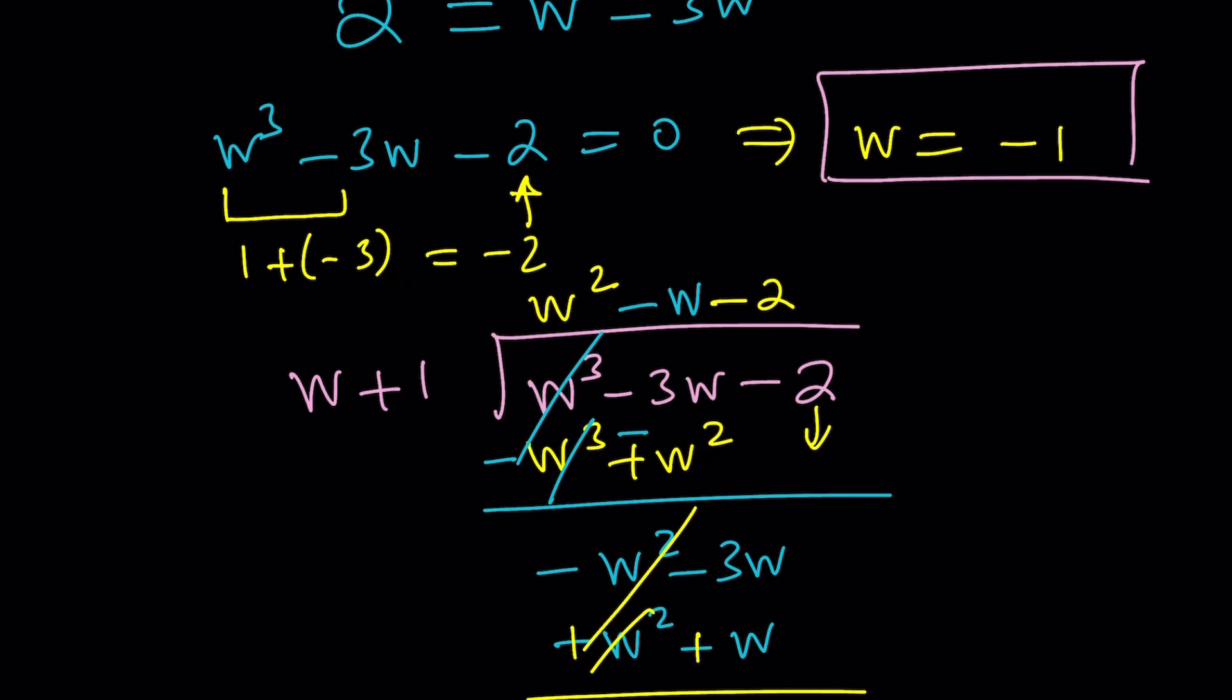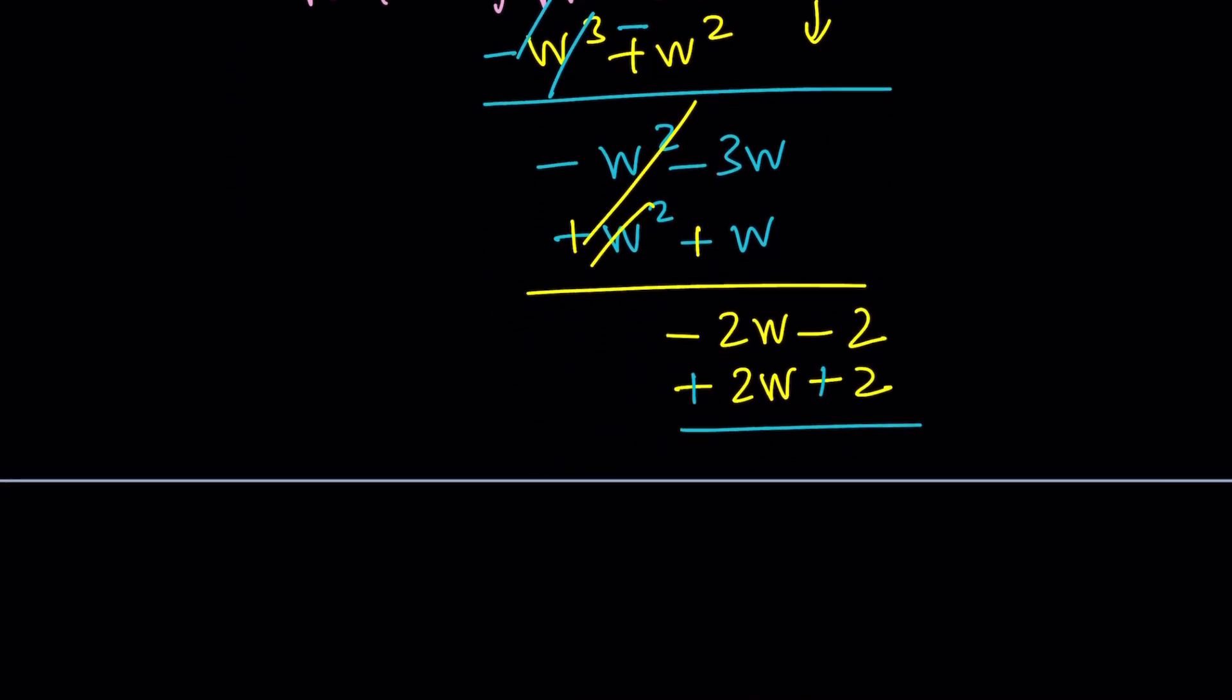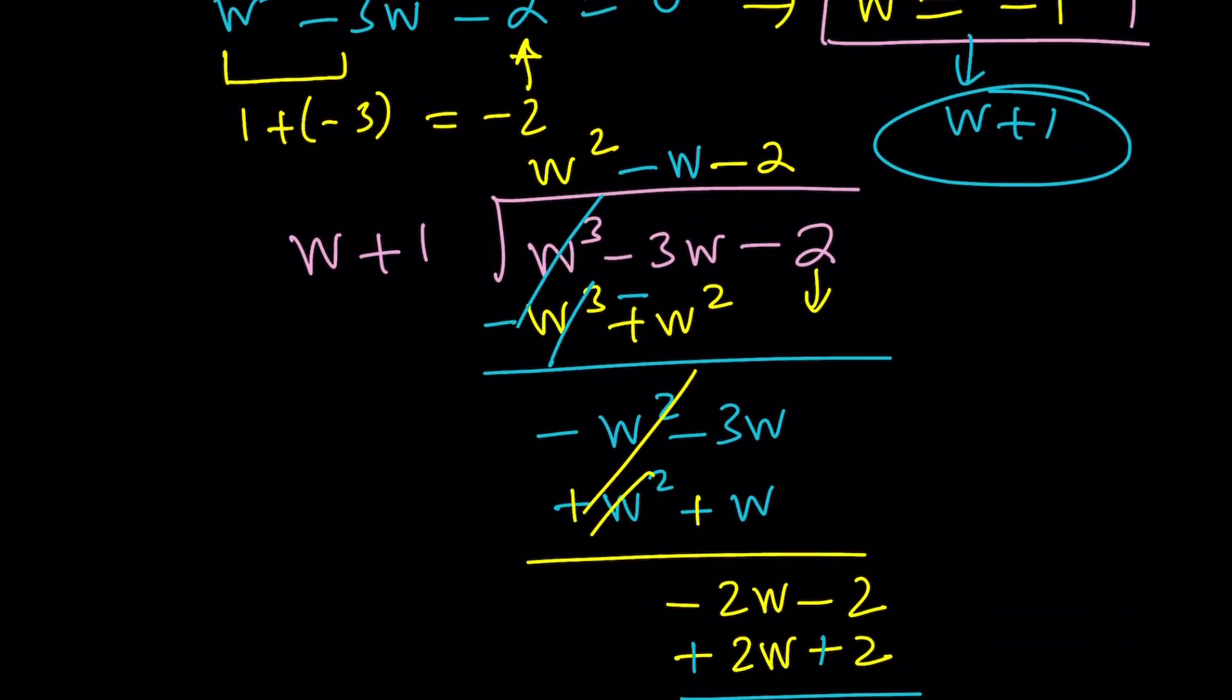Because we found the other factor. By the way, how did I go from this to w plus 1? Obviously, the factor theorem tells us if w equals negative 1 is a solution, then w plus 1 is a factor. That's called the factor theorem. Look it up if you're not familiar. And the remainder is 0, of course.